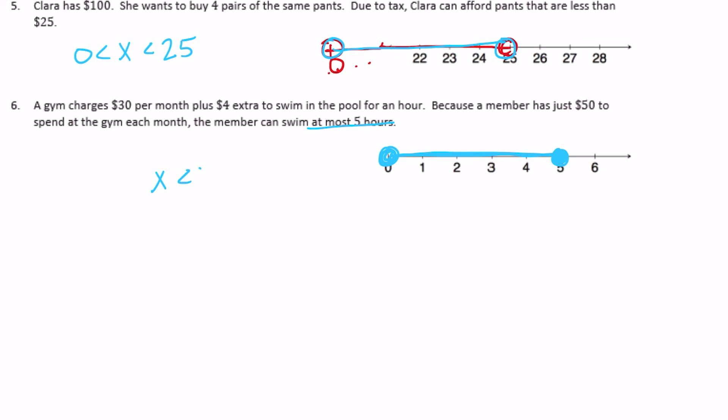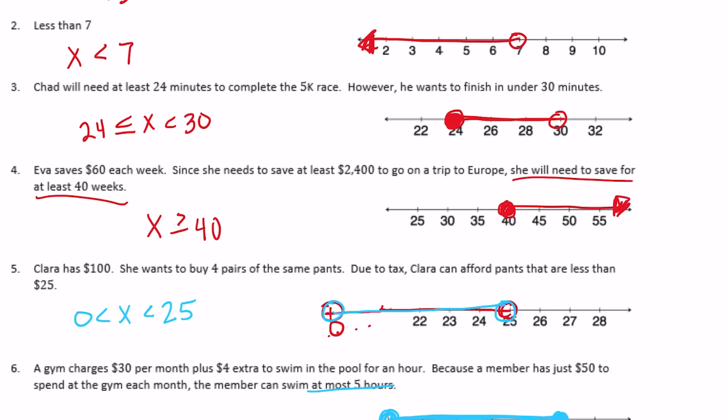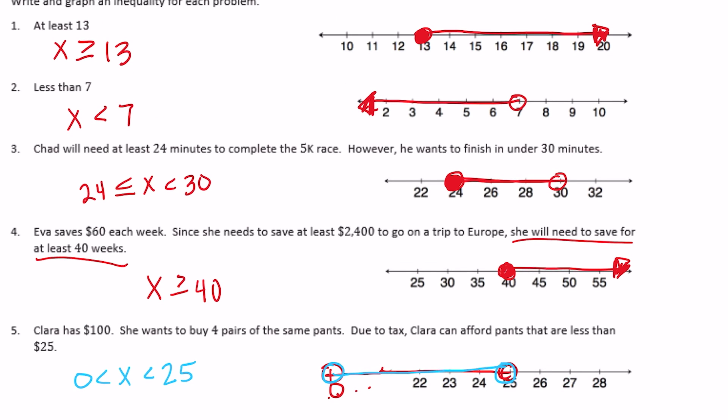So x needs to be less than five, but it needs to be or it could be less than or equal to five, or it could be greater than or equal to zero. So zero is less than or equal to x is less than or equal to five. And that is the end of the entire fourth module.